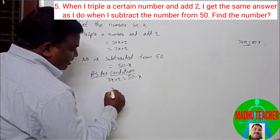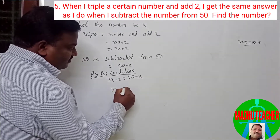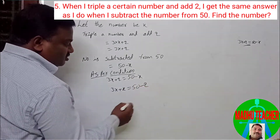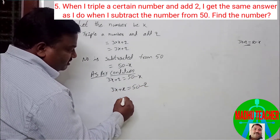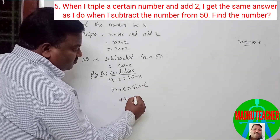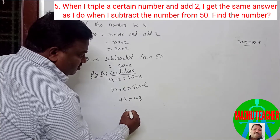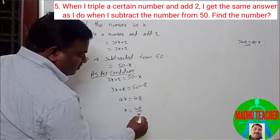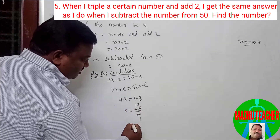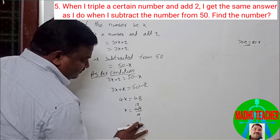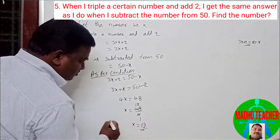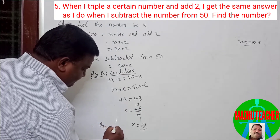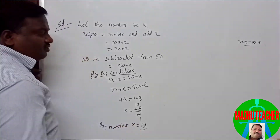Solving: transpose x to the left side and 2 to the right side. So 3x + x = 50 - 2, giving 4x = 48. Therefore x = 48 divided by 4, which equals 12. The number is equal to 12.